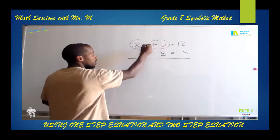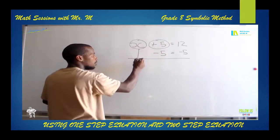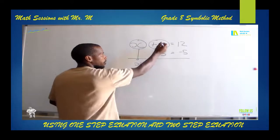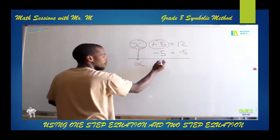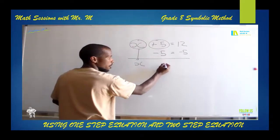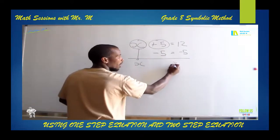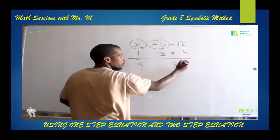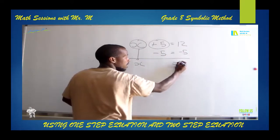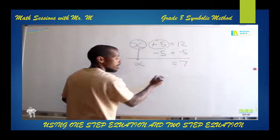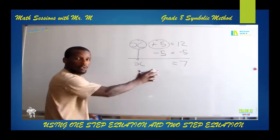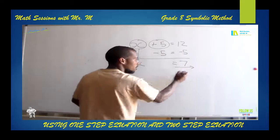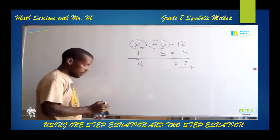You bring your X down. And 5 minus 5 is 0. Equals to 12 minus 5 is 7. And then you have solved your X. So X is equal to 7.